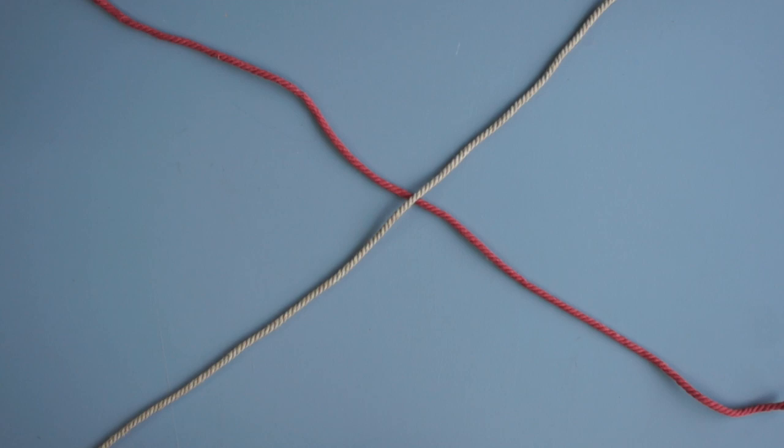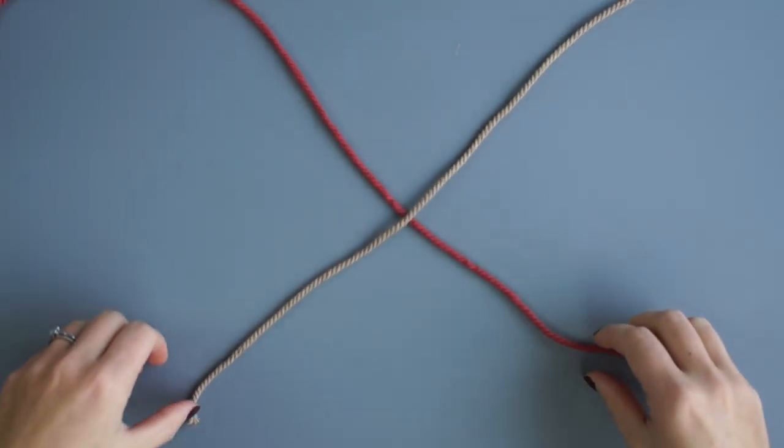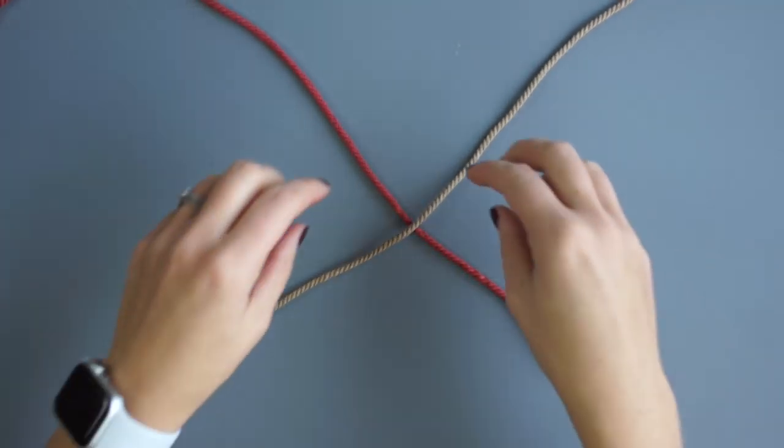Cut two pieces of rope that are approximately 2 feet in length, lay them out into an X formation and then adjust it so that the bottom of the X is a bit shorter than the top.